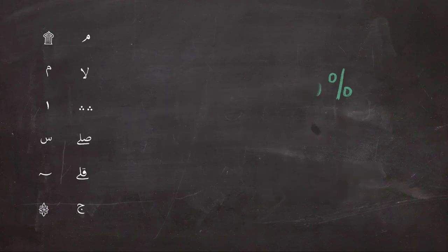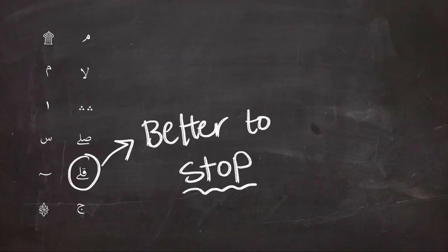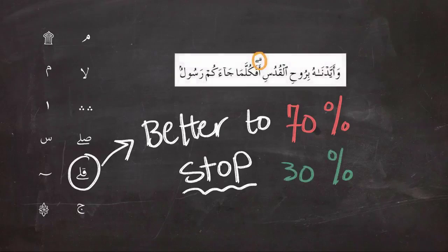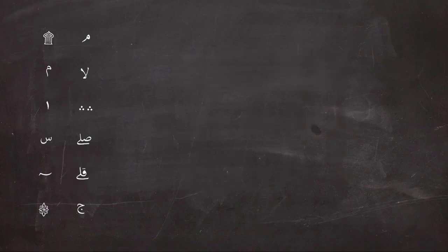Next is the symbol of qil, which is the exact opposite of sil, and it means it is better to stop. So 70% stop, 30% go, like the example. So it is better to stop at the sign.